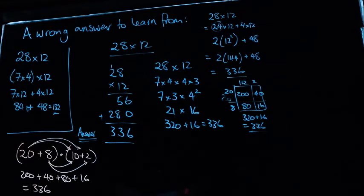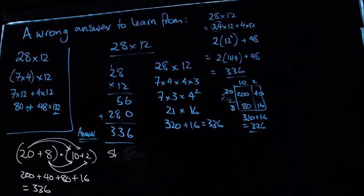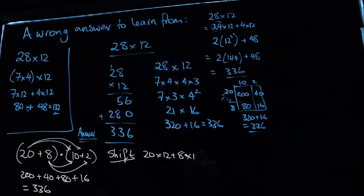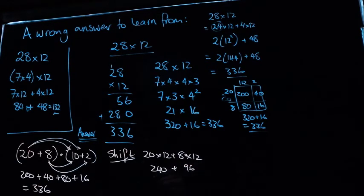And following on from there, I guess what I thought about it, I kind of labeled it as like a sideways shift. Because I guess it's kind of the same thing. I thought about 20 times 12 plus 8 times 12. And this is 240. And this will be 8 times 12 is 96 and we end up at 336. So we end up in the same spot.